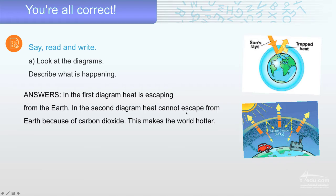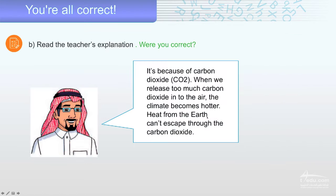But in the second diagram, heat cannot escape from the earth because of carbon dioxide. This makes the world hotter. That's why it's dangerous, everybody. Smokes from the cars, smokes from the factory, that will make the world hotter.